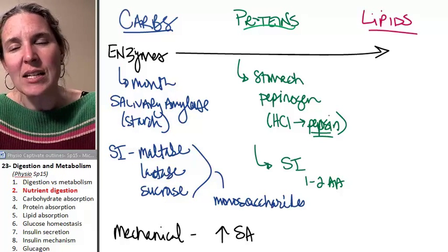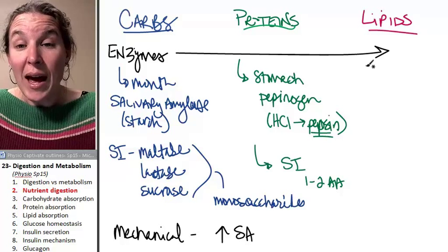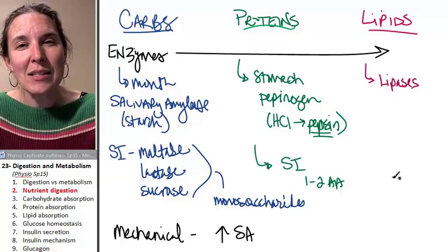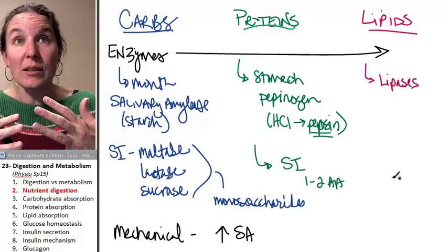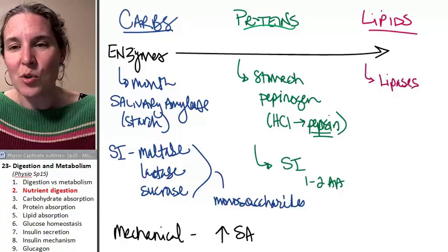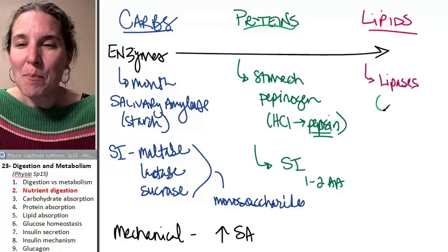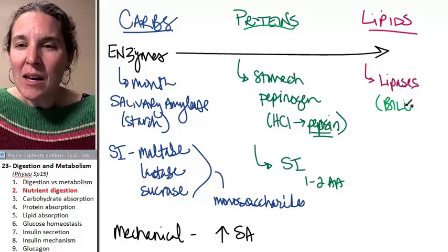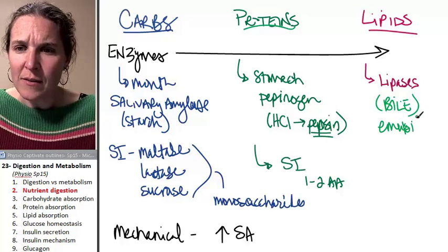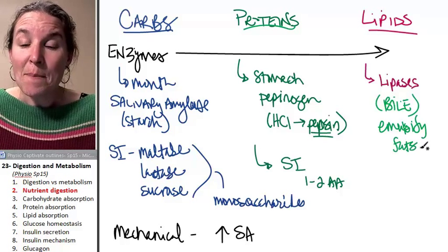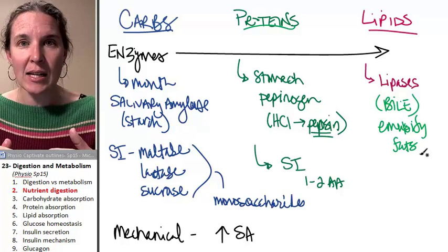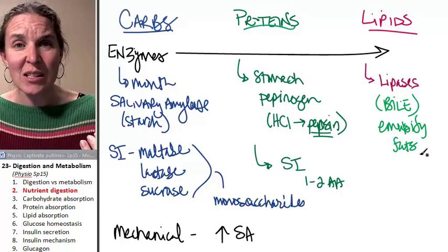And then lipids are dealt with in a different way. We do have various lipases - these are fat digesters. Lipases break the lipids up into their component parts. But someone really important in this process is bile. Bile helps emulsify fats.